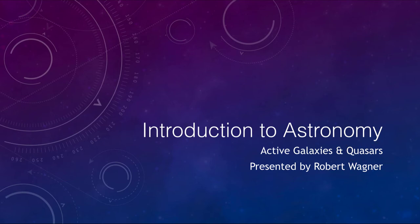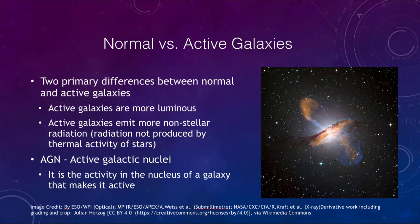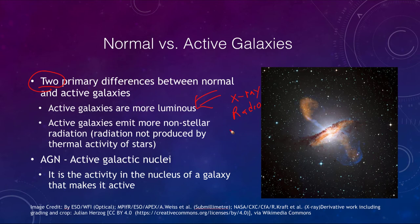Let's look at the differences between a normal and an active galaxy. There are two primary differences. First, active galaxies are more luminous — they are putting out more energy. Luminous does not just mean brighter in terms of visible light, but can mean all sorts of things. Many times it can be x-ray or radio emission, so they are more luminous across the entire spectrum.